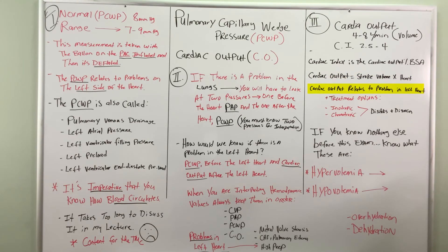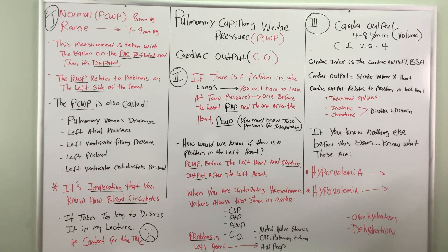Cardiac output problems are in the left heart. Those problems include mitral valve stenosis, congestive heart failure, pulmonary edema, or high PEEP. Treatment options for a left-heart problem include inotropic or chronotropic types of drugs — such as digitalis or digoxin — which you will see on the exam. You need to know what hypervolemia is — overhydration — and what hypovolemia is — dehydration. These are essential for the TMC exam.